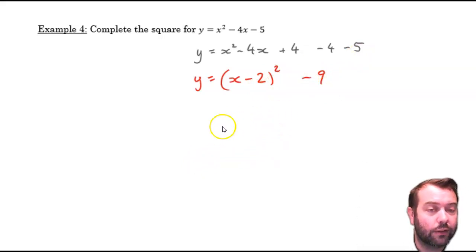When we complete the square like this, the coordinates of the vertex are going to be at 2, negative 9. We'll talk a bit more about that later. That's the process, completing the square for monic quadratics.